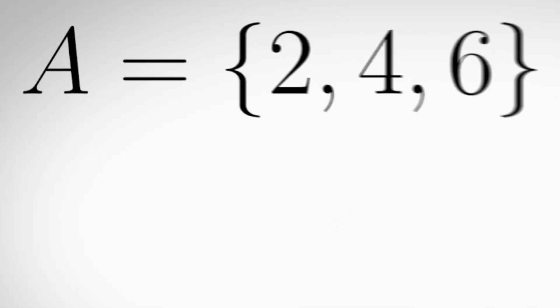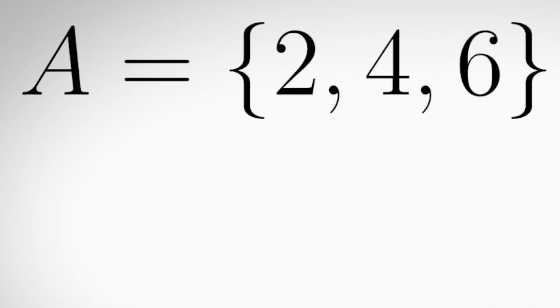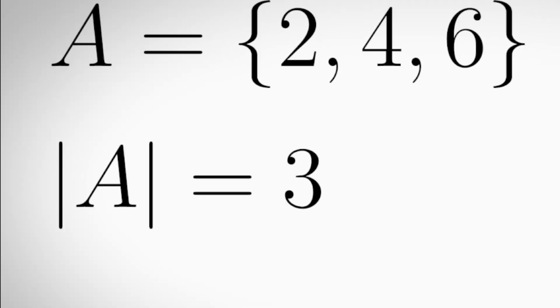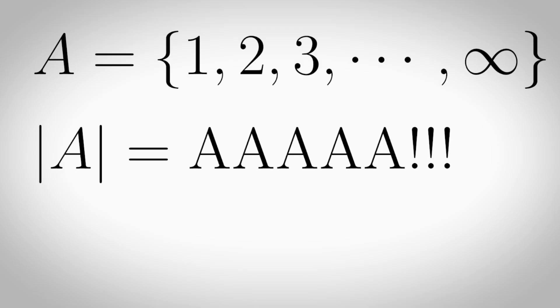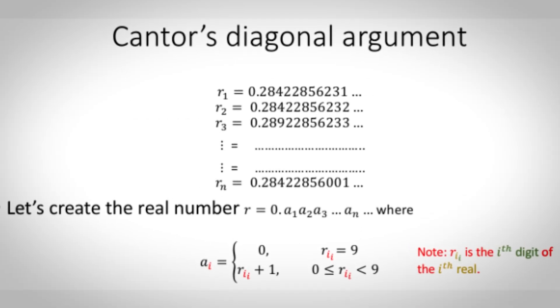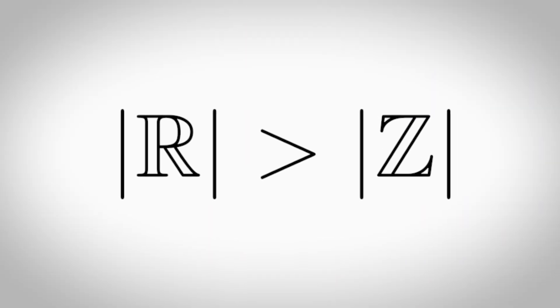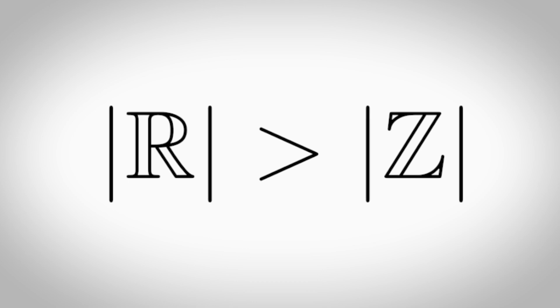Cardinality is a way to measure the size of a set. For example, if a set A contains elements 2, 4 and 6, then the cardinality of that set is 3. Simple, right? Well no, because you can also have cardinalities of infinite sets, which is how we prove that there are more real numbers than there are integers because the cardinality of the set of real numbers is greater than the cardinality of the set of integers.